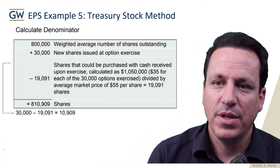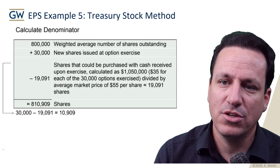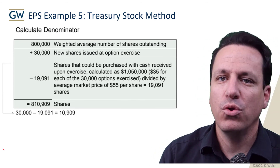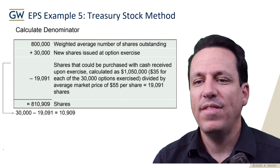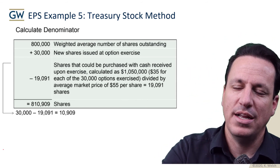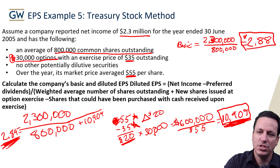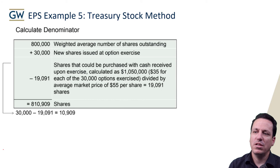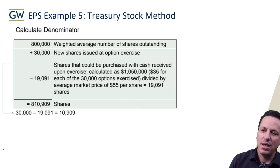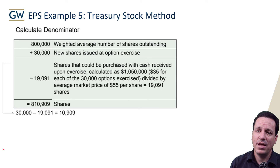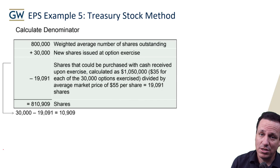The book provides a different methodology. It says: new shares issued at options exercise minus shares that could be purchased with the cash received. They go through the cash received, subtract it with the new shares issued, and you end up with the same answer — 10,909. Instead of figuring out the net value the company gives up and assuming new shares issued, the book works through shares purchasable with cash received and new shares issued to make up the difference. Either way, you arrive at 10,909 new shares outstanding. That's the treasury stock method with an options exercise. See you in the next video.